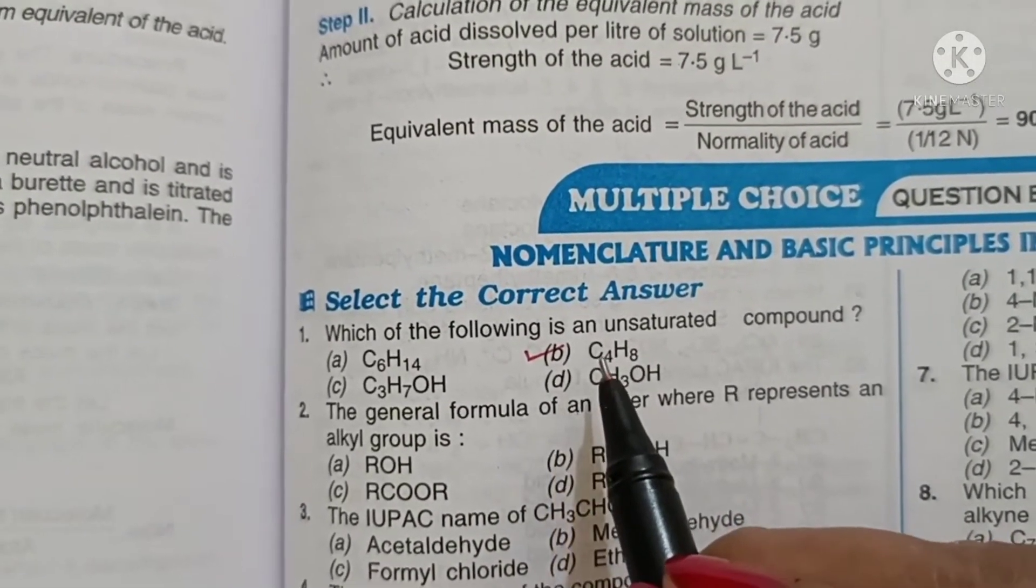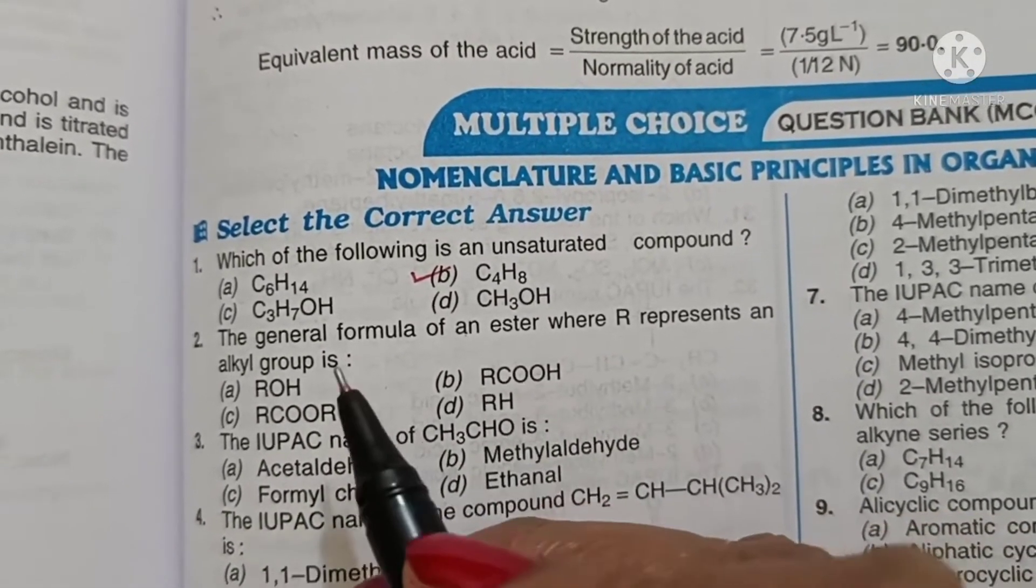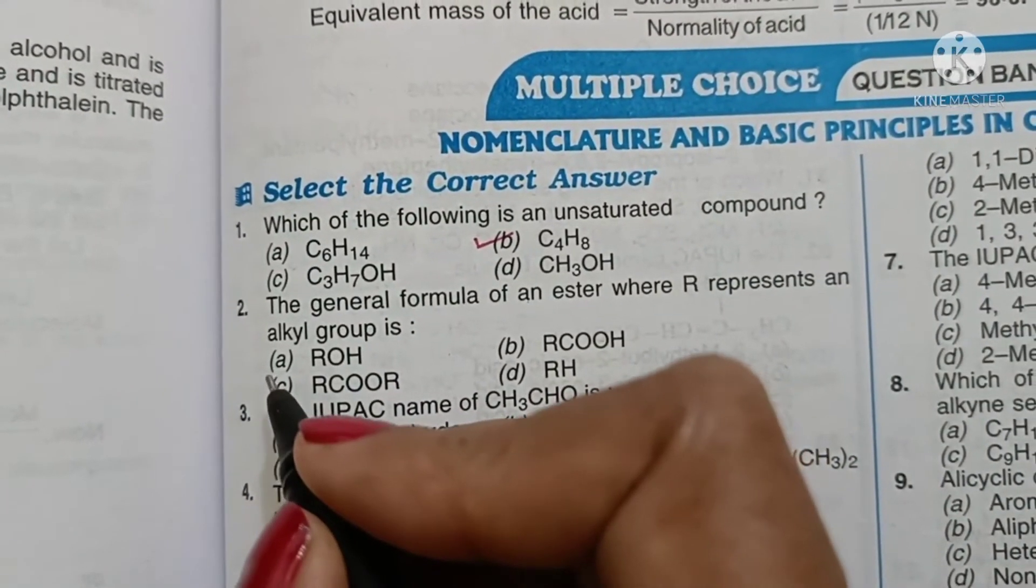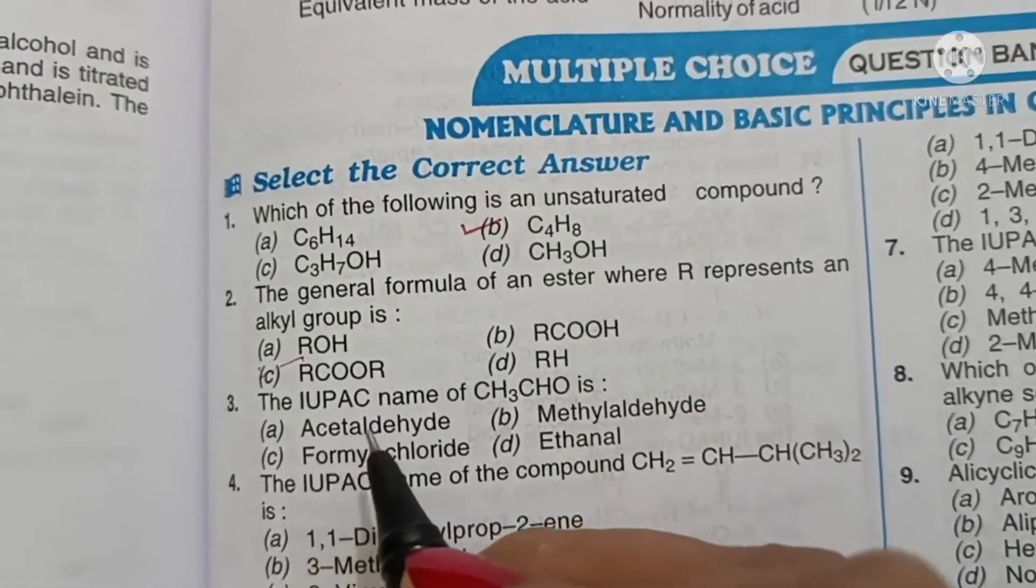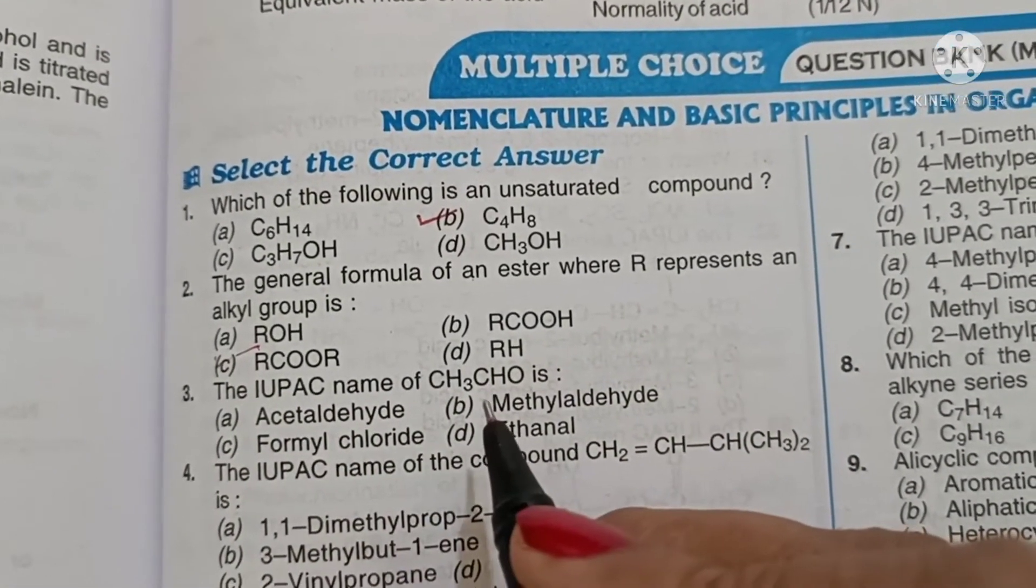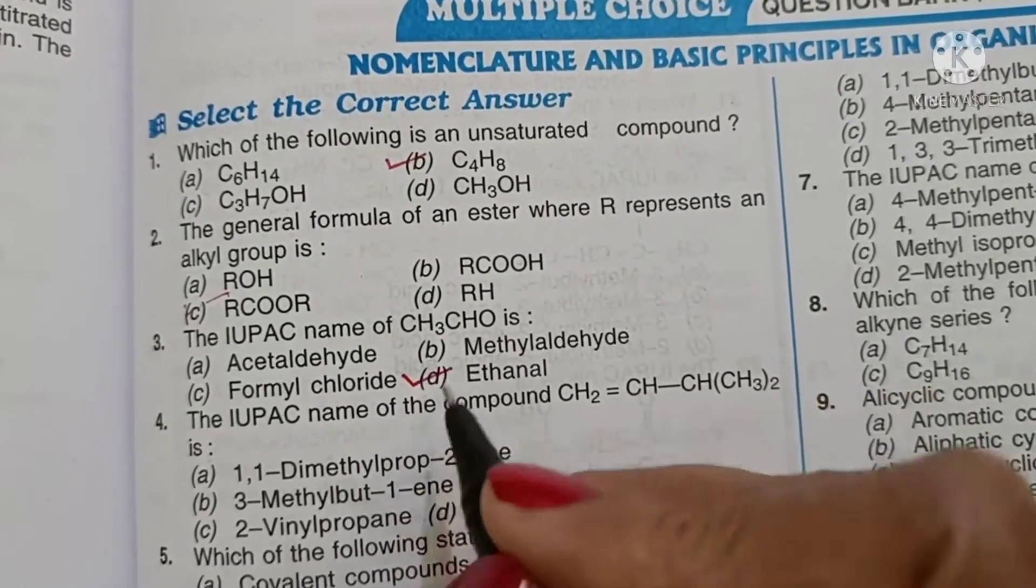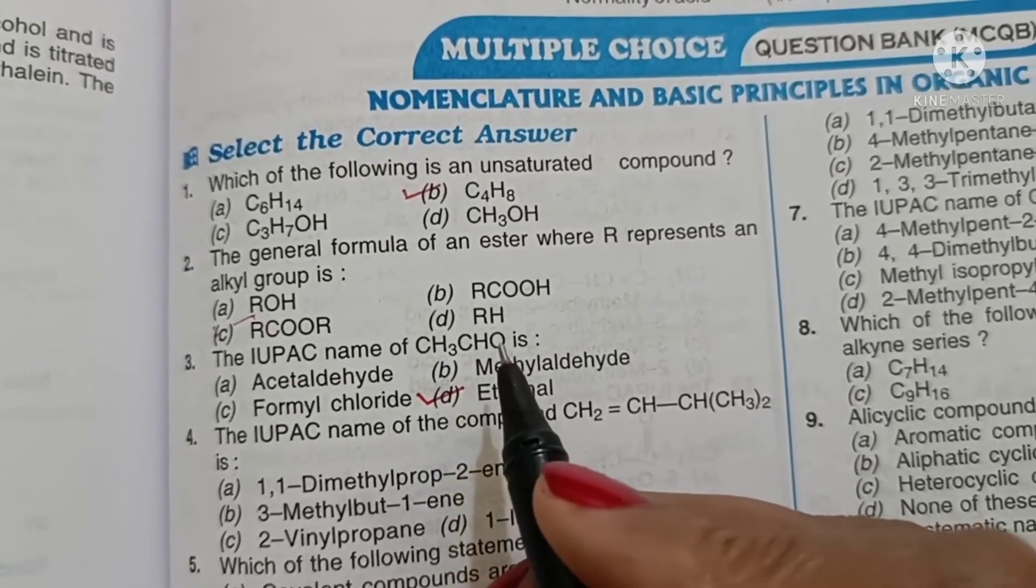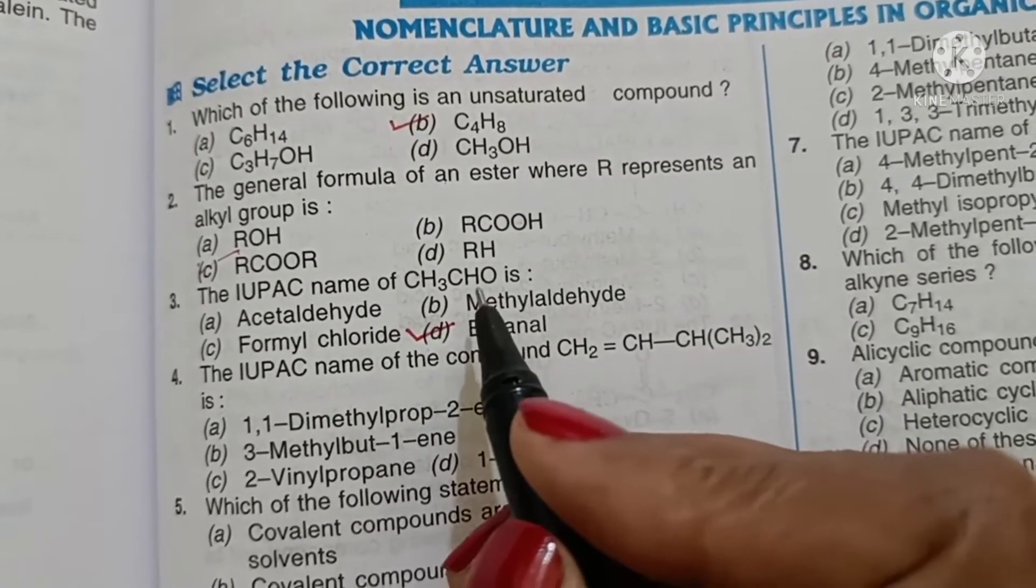The general formula of an ester where R represents an alkyl group is option C, RCOOR. The IUPAC name of CH3CHO is ethanal - two carbons, eth, and ane for single bond and al for aldehyde group.